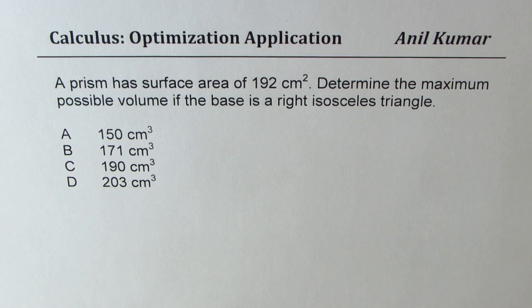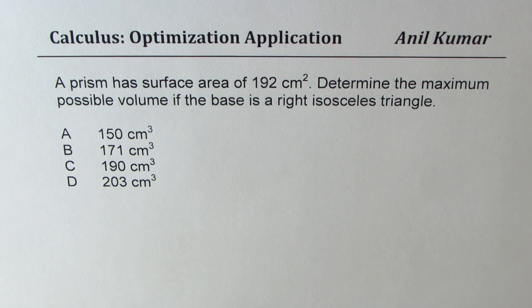I'm Anil Kumar sharing with you a test question on optimization application. The question here is a prism has surface area of 192 centimeter square. Determine the maximum possible volume if the base is a right isosceles triangle.